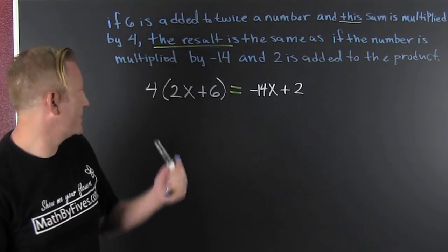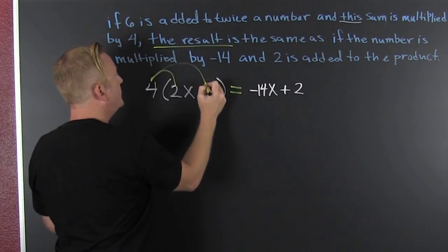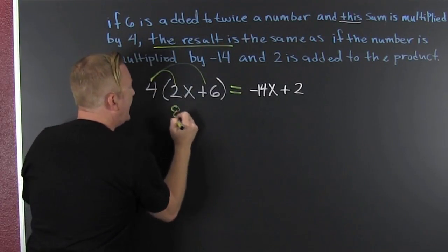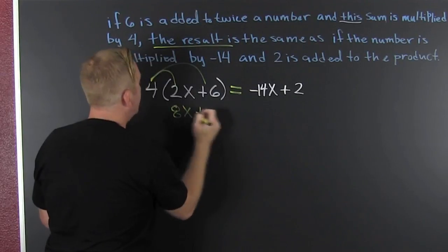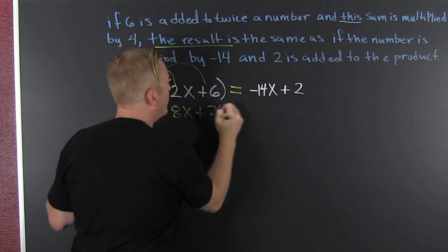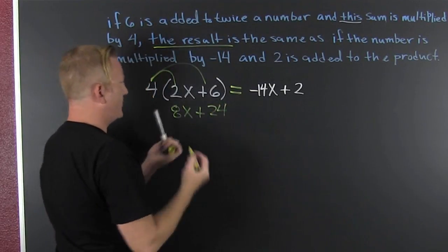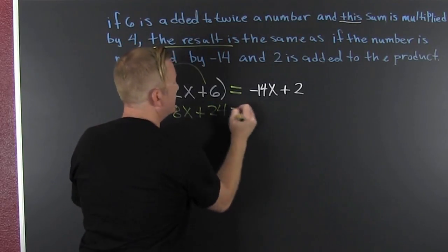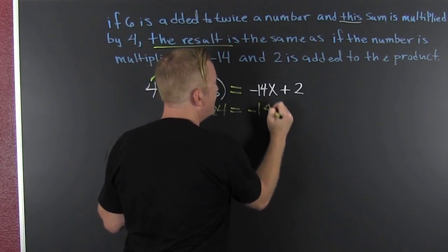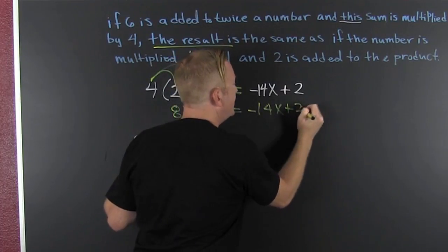So it goes, it goes, it goes, whoop. 8x plus 24. Yeah, six times four is 24. And then that's, bring that down, minus 14x plus a deuce.